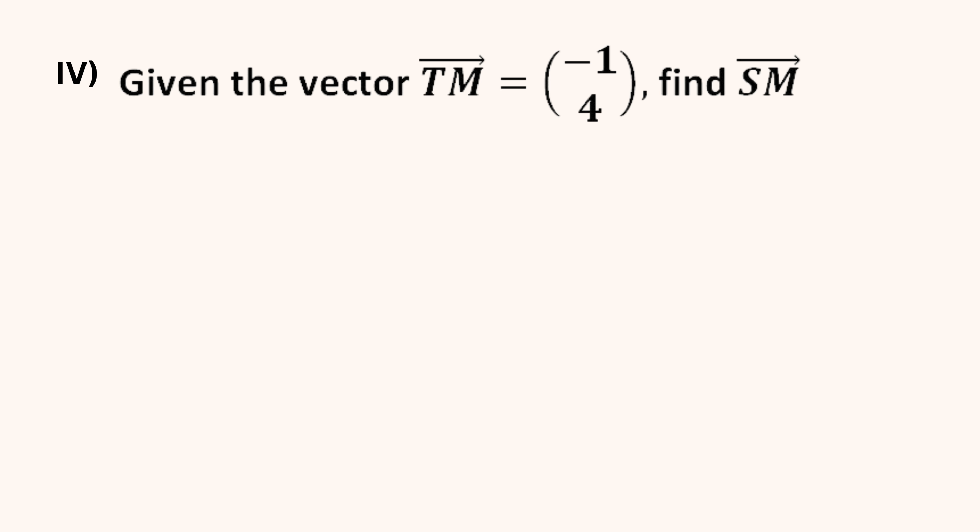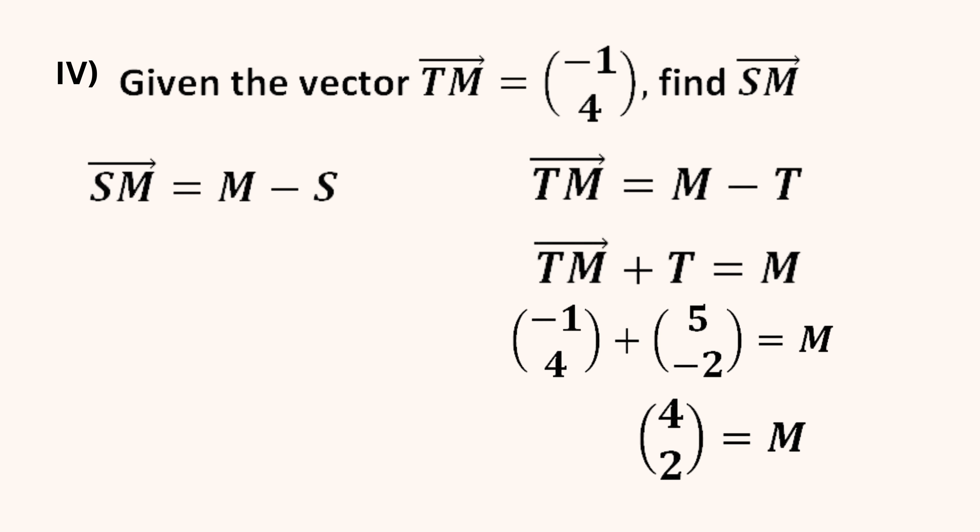Another route we could have taken is to find point M by equating the vector TM to M minus T. We can group negative T on the right hand side to transpose for M. Vector TM is (-1, 4). The point T is (5, -2). Now negative 1 plus 5 is 4, while 4 plus minus 2 is 2. To get vector SM, we can reverse the points and subtract to get M minus S. We can substitute (4, 2) for M and (1, 1) for S. 4 minus 1 is 3, while 2 minus 1 is 1. Therefore, vector SM is (3, 1).